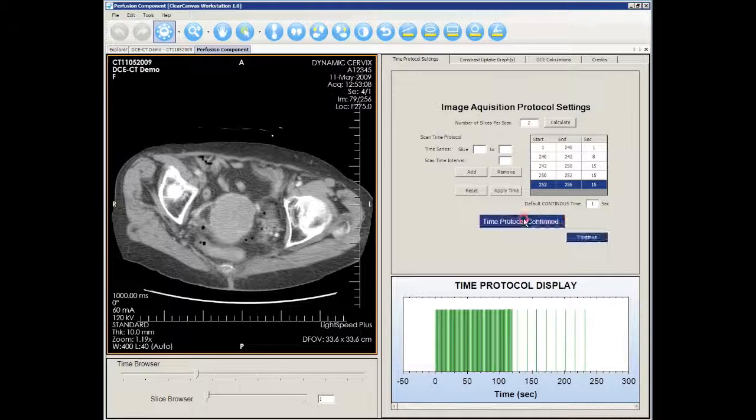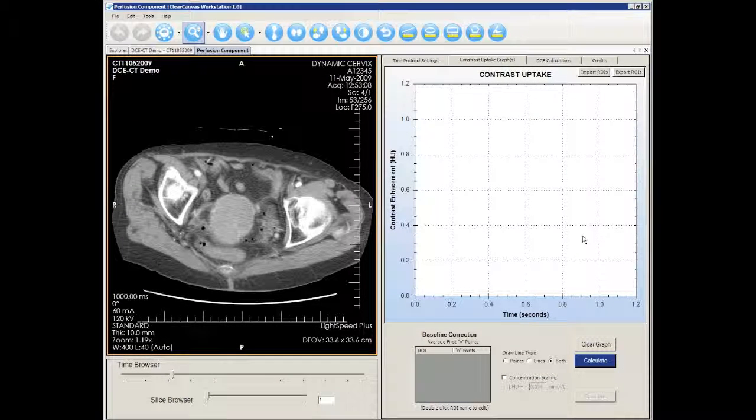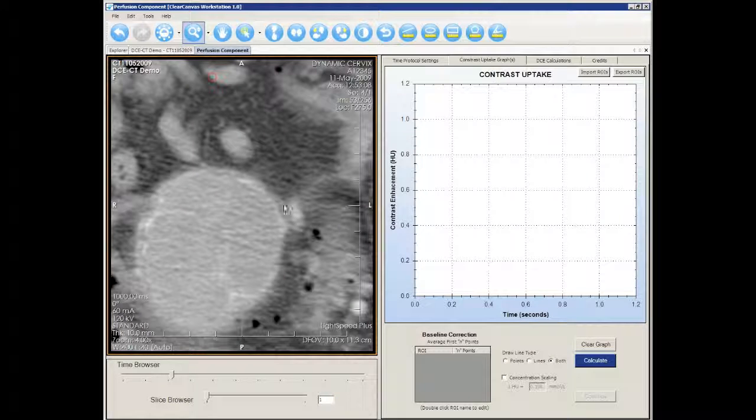Click Confirm Time Protocol and then click Continue to proceed. To generate contrast uptake curves, you need to contour your region of interest or import them from an existing file. Let's contour our own region of interest. Use the magnifying glass to enlarge the image.